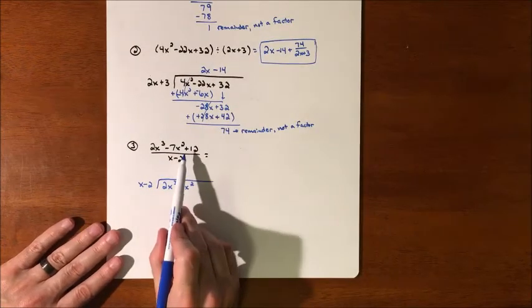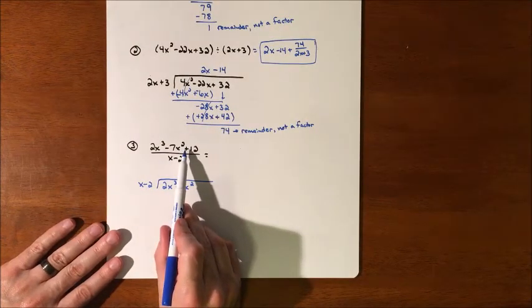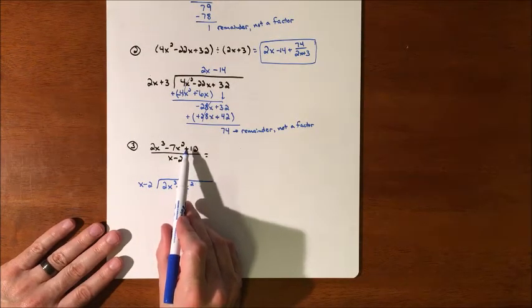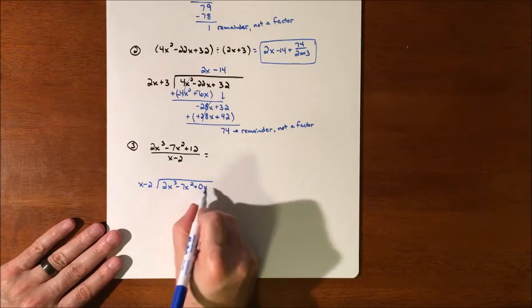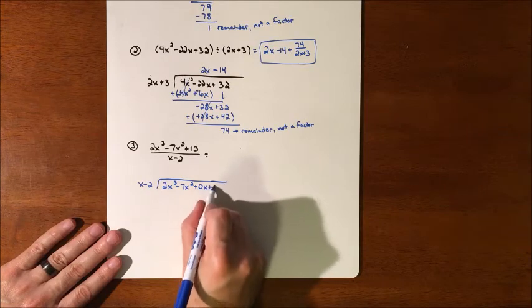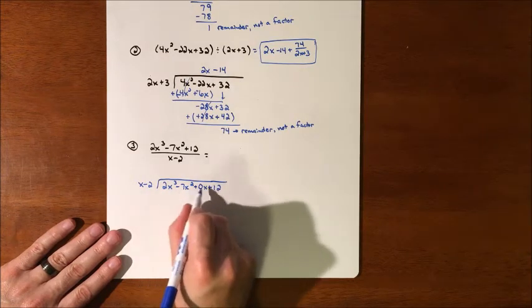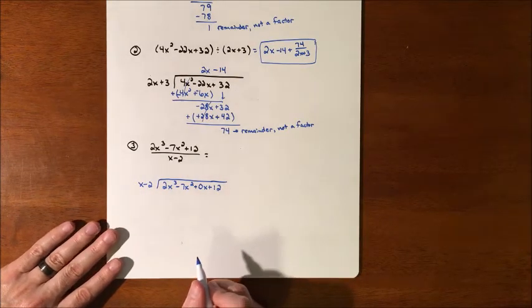We haven't really ever done that before, but we do need to do this when we're doing division. So we have to fill the x value. We need to fill it with a 0x, and then plus 12. Every single term has to be accounted for when you're doing long division.